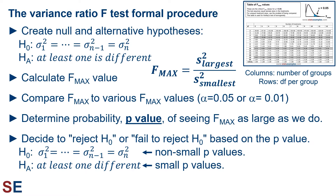Then we compare the Fmax value to Fmax critical values from an Fmax table. Critical values depend on the number of groups and sample sizes for each group. These tables, like the one shown from the Stats Examples website, are often arranged with separate columns for each number of groups and each row corresponding to the degrees of freedom for each group. Then we determine the p-value — the probability of seeing an Fmax calculated value as large as we do.